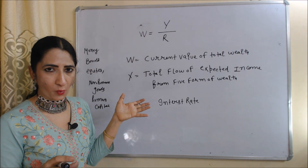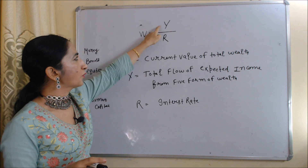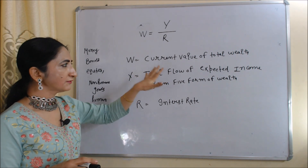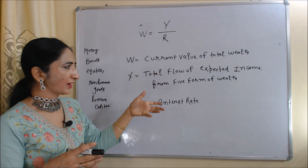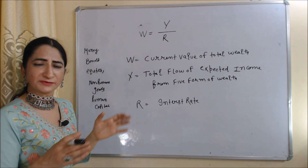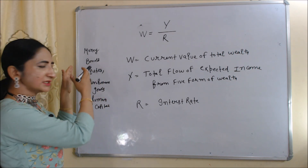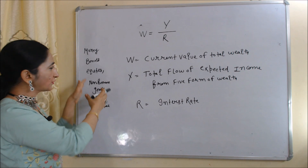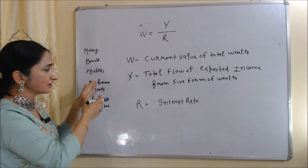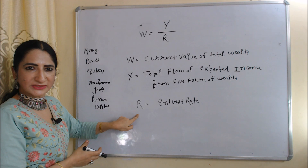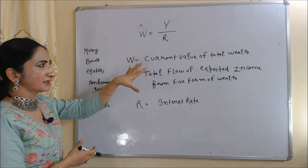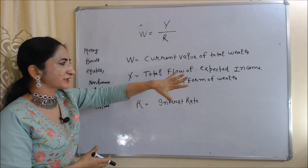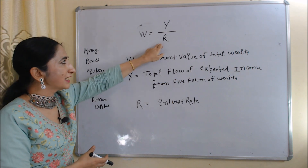Here is the formula to calculate the current value of total wealth: W = Y / r. Here, W is the current value of total wealth, Y is the total flow of expected income from the five forms of wealth — money, bonds, equity, non-human goods, and human capital — and r is the interest rate.